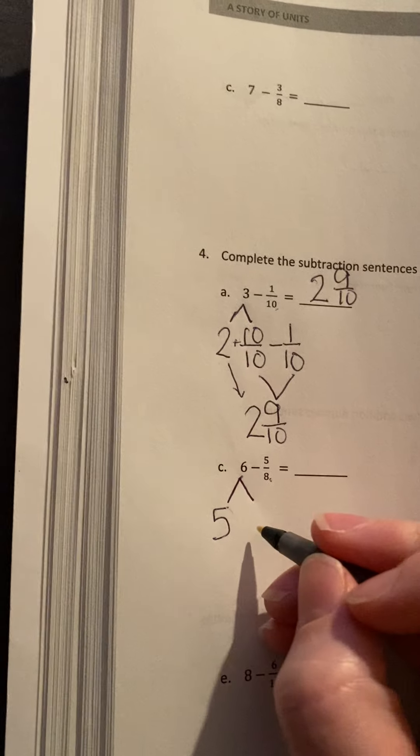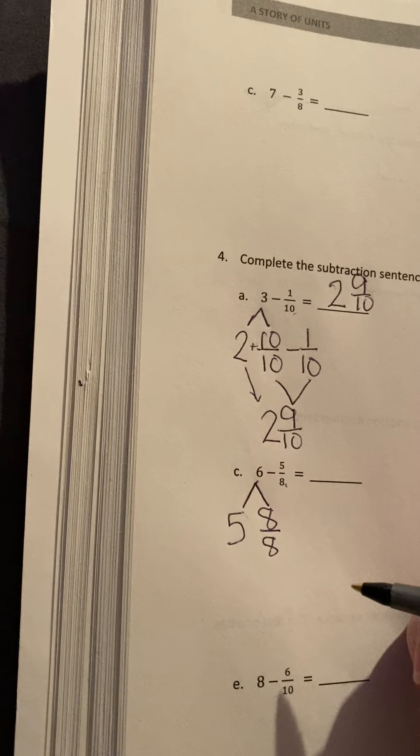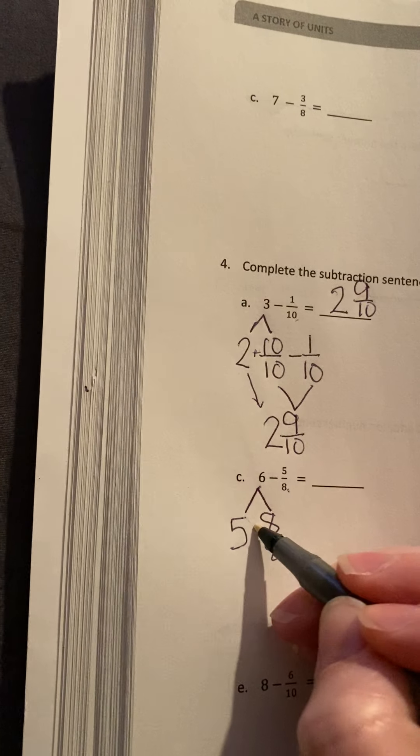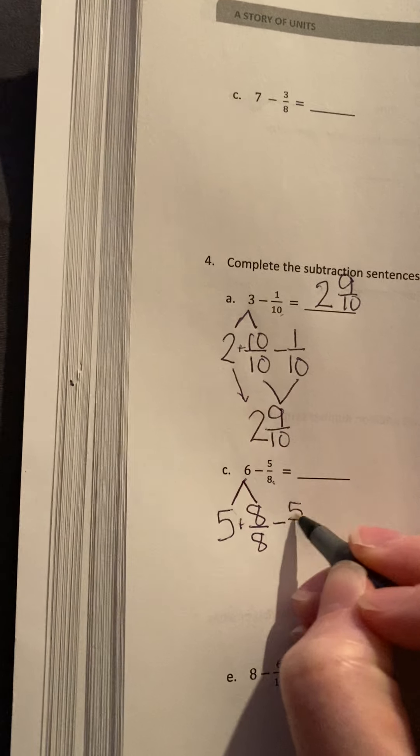So I have eighths here, so I want to have eighths here. Well, 1 whole would be 8 out of 8. So 6 turns into 5 and 8 eighths. Now I can subtract my 5 eighths.